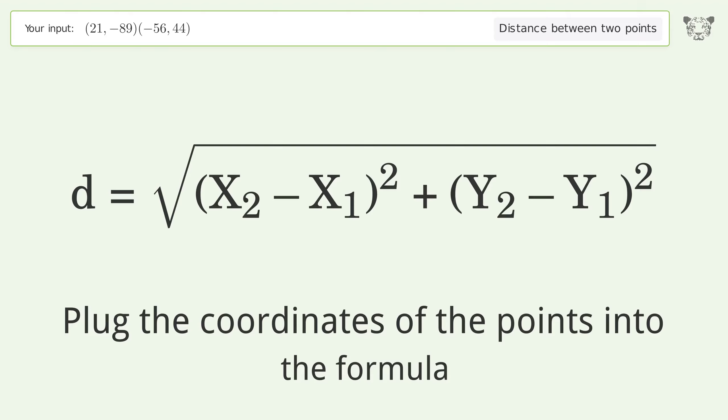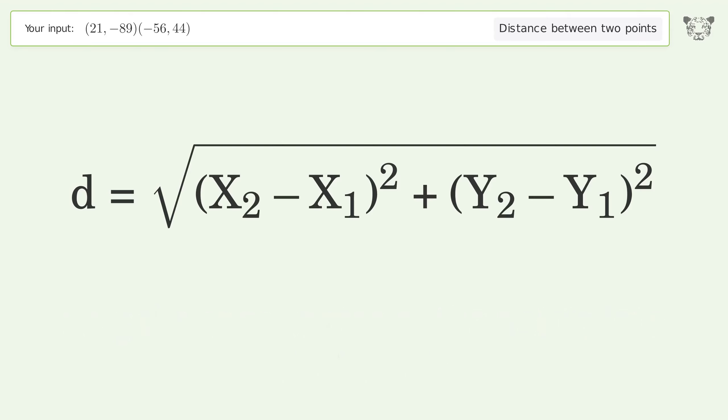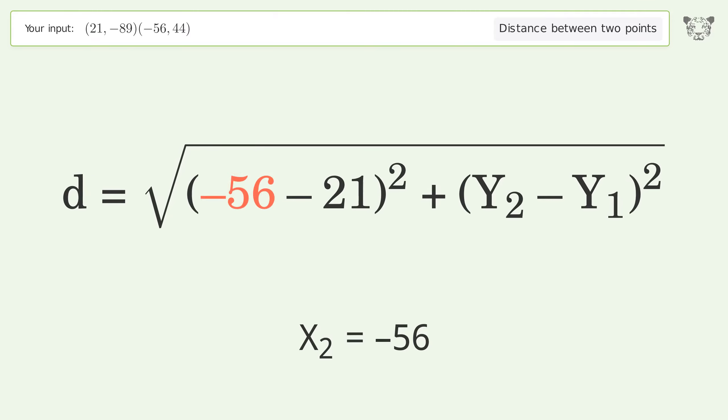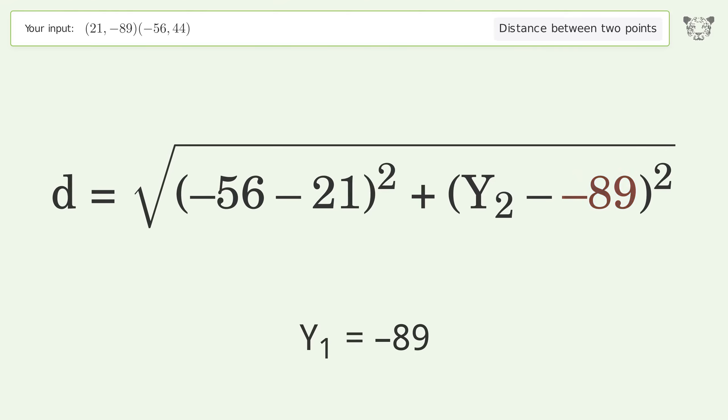Plug the coordinates of the points into the formula: x1 equals 21, x2 equals negative 56, y1 equals negative 89, y2 equals 44.